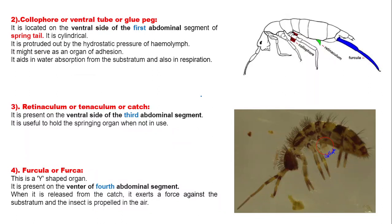Colophore, also called ventral tube or glupeg. The colophore is a cylindrical structure present on the ventral side of the first abdominal segment in the springtail.